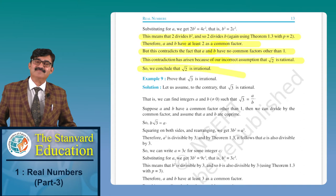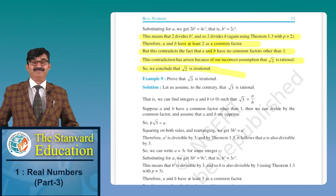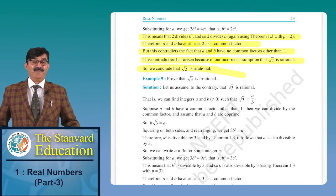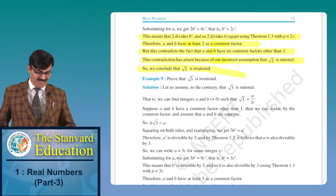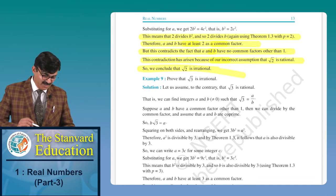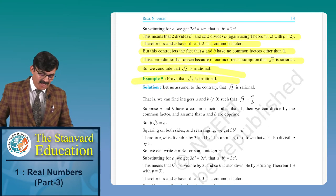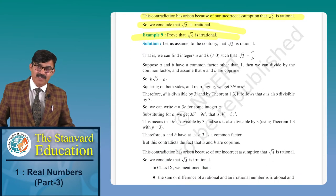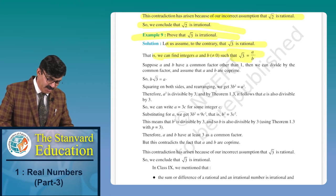I have explained this three times. Now one or two more times you can try to make it very easy to understand. Example number 9 is the same: prove root 3 is irrational. We assume root 3 is rational, write root 3 = A upon B — this is the same approach.